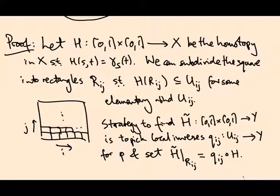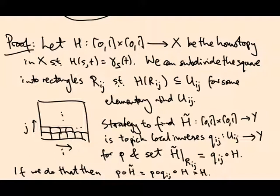So certainly if I do that, if we do that, then when I project this H tilde homotopy I get P composed Q_ij composed H, and Q_ij is a local inverse for P so this is the identity and I just get H. So by construction, if I can do this, then H tilde is a lift of the homotopy H.